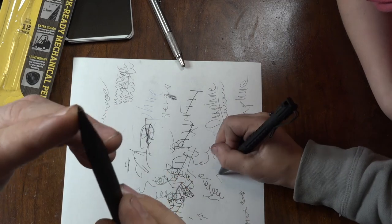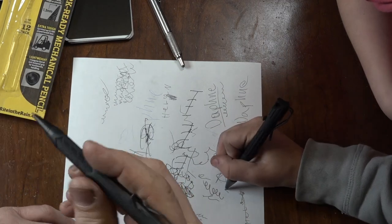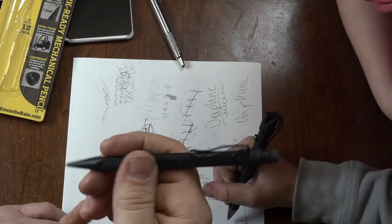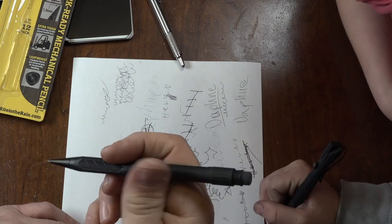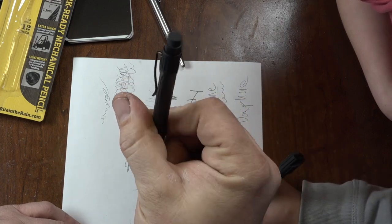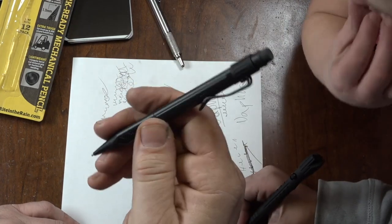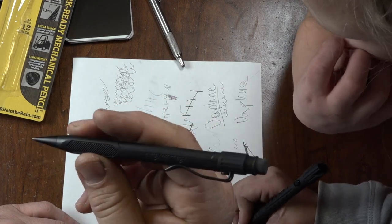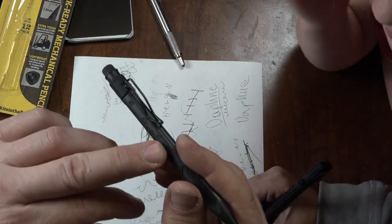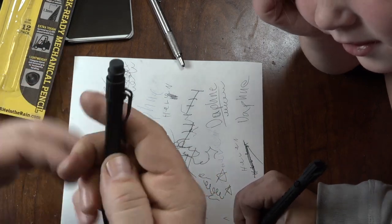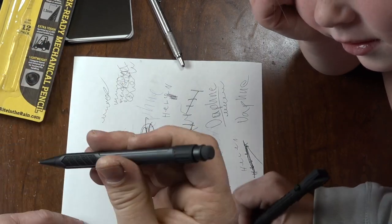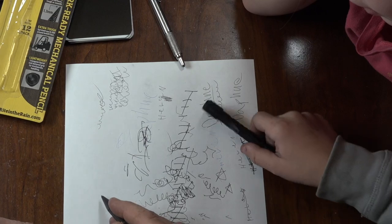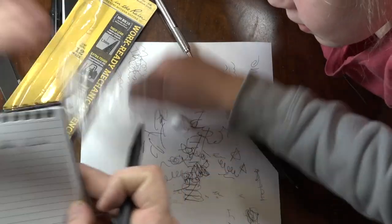It has a black eraser. It came loaded with some lead. And there's some grip here. The plastic's kind of slippery. But there's some textures, some lines here. Hash marks. Rite in the Rain on the side. Look, another robust pocket clip. I'd really like to see that. Alright. Let's try this mechanical pencil.